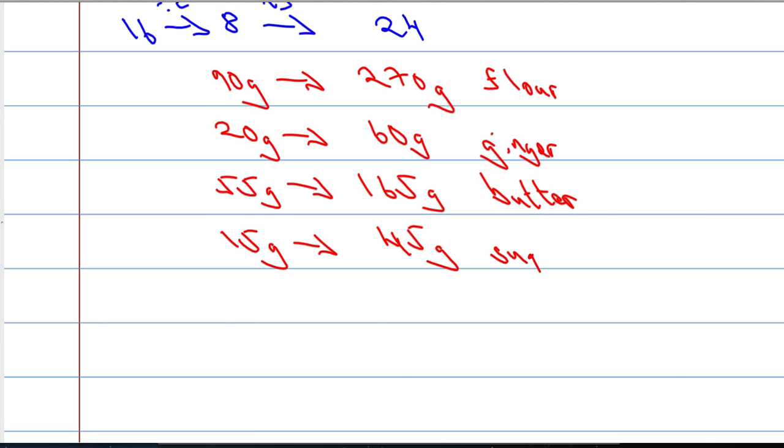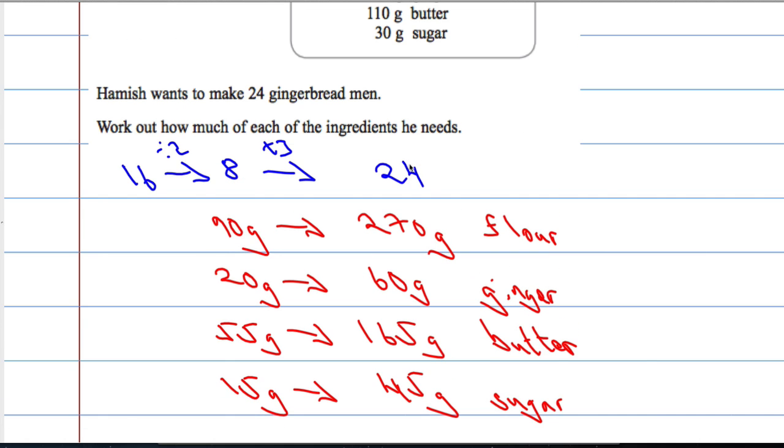So your answers are here: 270 grams of flour, 60 grams of ginger, 165 grams of butter, and 45 grams of sugar for 24 people.